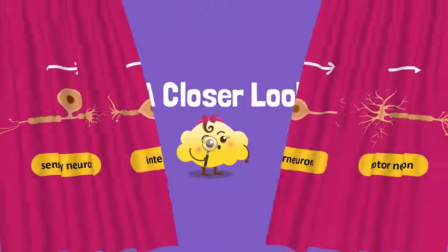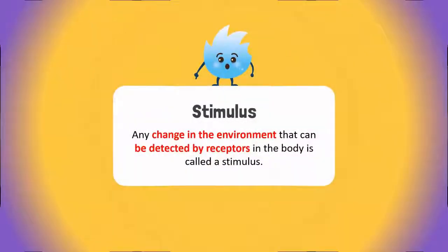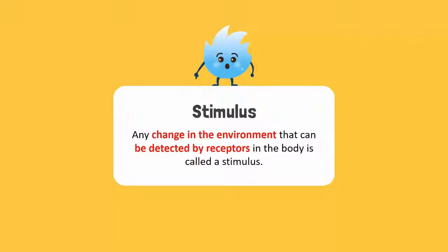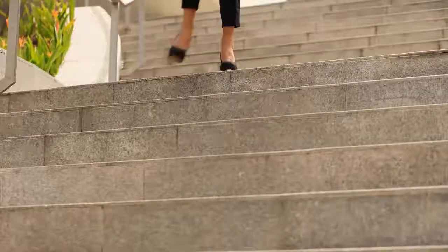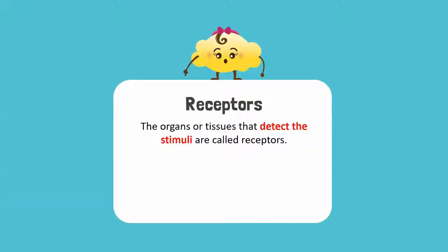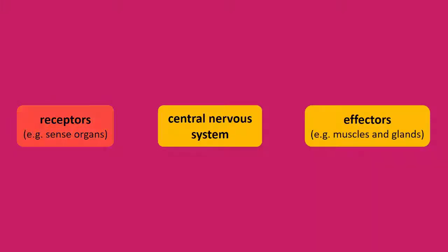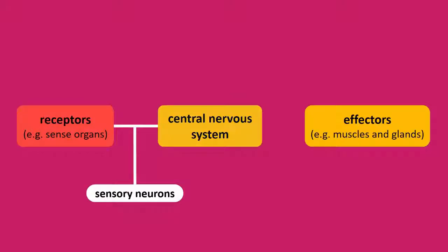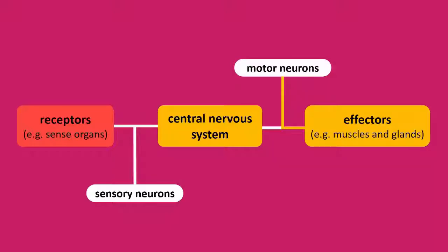Any change in the environment that can be detected by receptors in the body is called a stimulus. For example, when you injure your foot while walking, a stimulus was detected. The organs or tissues that detect the stimuli are called receptors. In our example, the skin on the foot is the receptor. When you get an injury, the skin initiates a nerve impulse which is carried by sensory neurons to the central nervous system. The central nervous system processes the message and transmits the nerve impulses to motor neurons. The motor neurons carry the nerve impulses to the part of the body that produces responses. Such parts are called effectors. Muscles and glands in the body act as the effector.